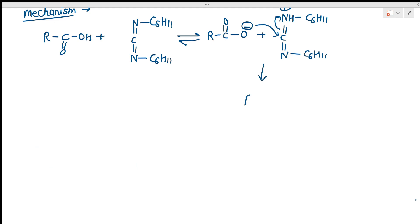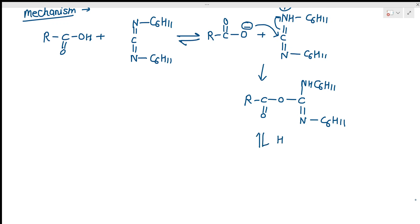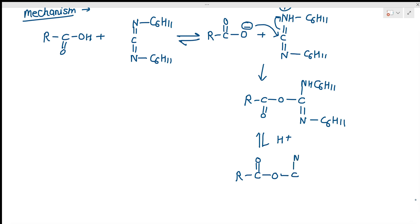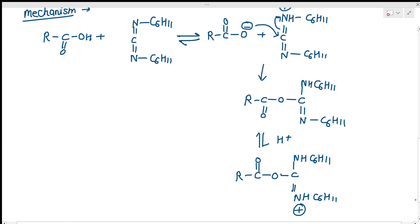A new bond is formed giving R-C(=O)-O-C(=NH-C6H11)=N-C6H11, which in the presence of a proton gets converted to R-C(=O)-O-C(=NH-C6H11)-NH+-C6H11. This intermediate bears a positive charge and is then attacked by the alcohol in the next step.